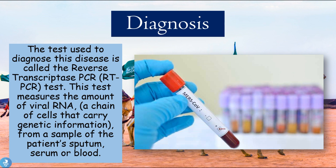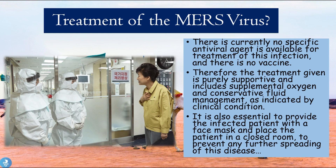How can one diagnose MERS? The test used is called the reverse transcriptase PCR test, or RT-PCR test. This test measures the amount of viral RNA, because this virus is an RNA virus. The RNA is a chain of cells that carry the genetic information, and this viral RNA can be measured from samples of the patient's sputum, serum, or blood.